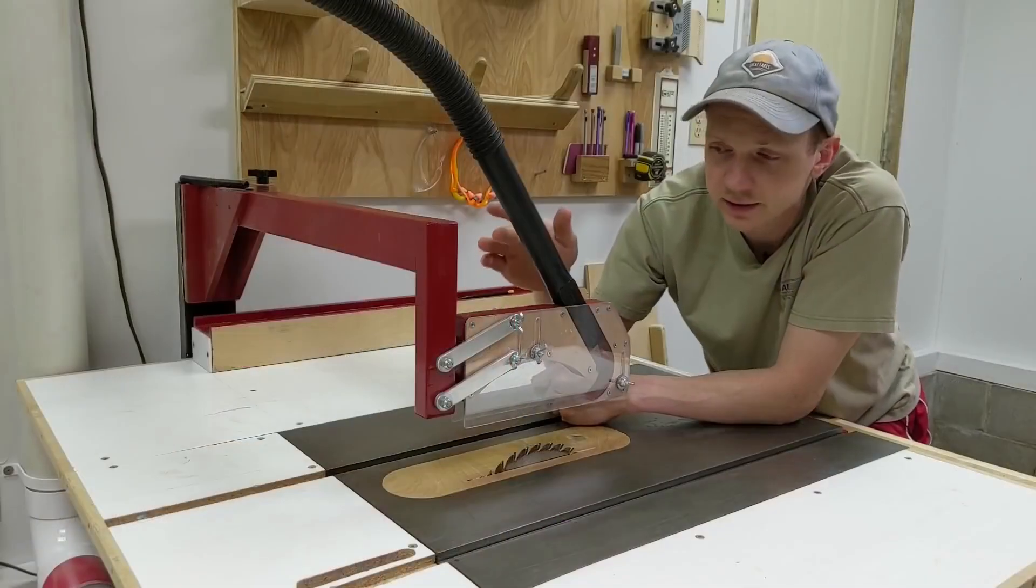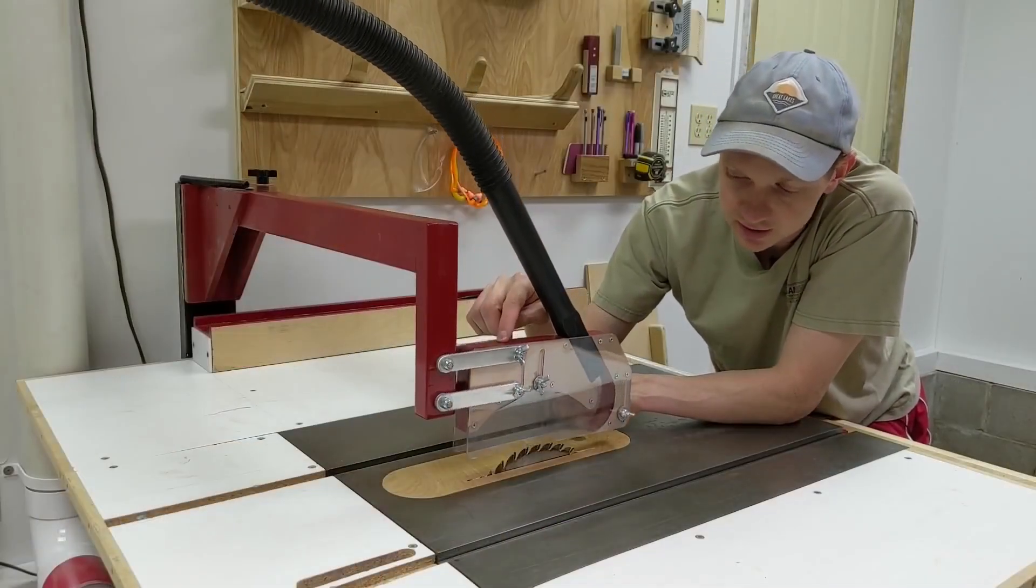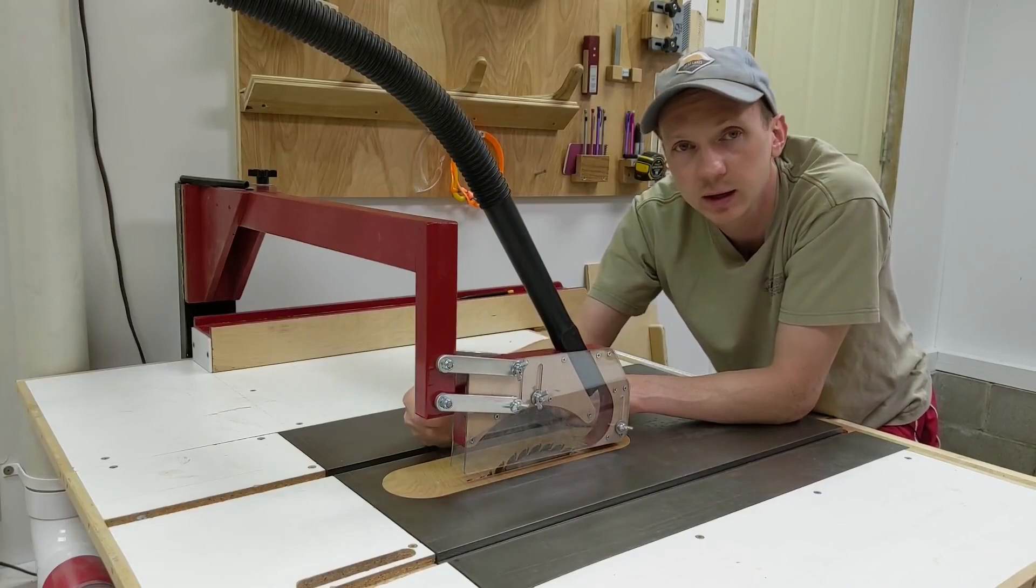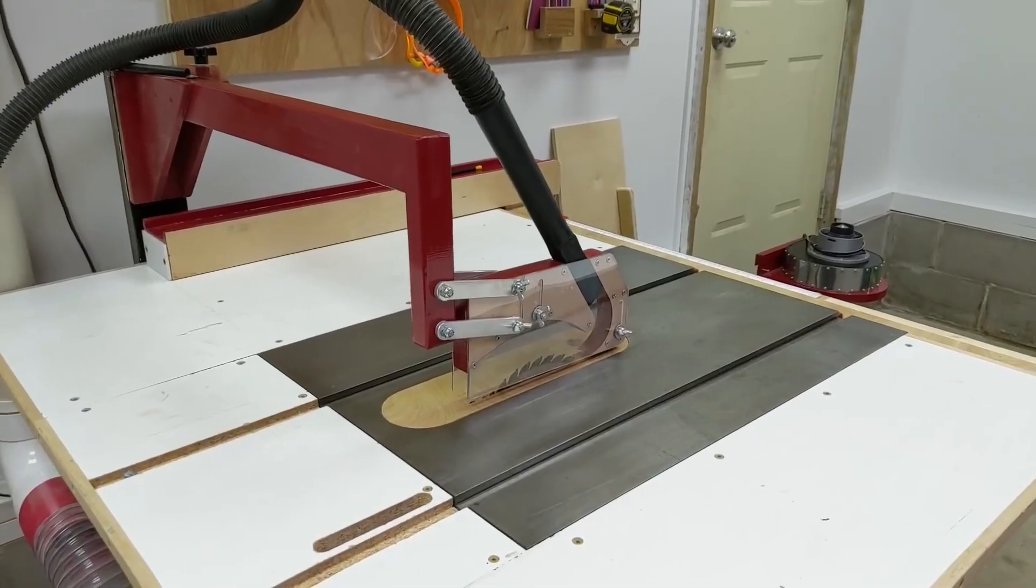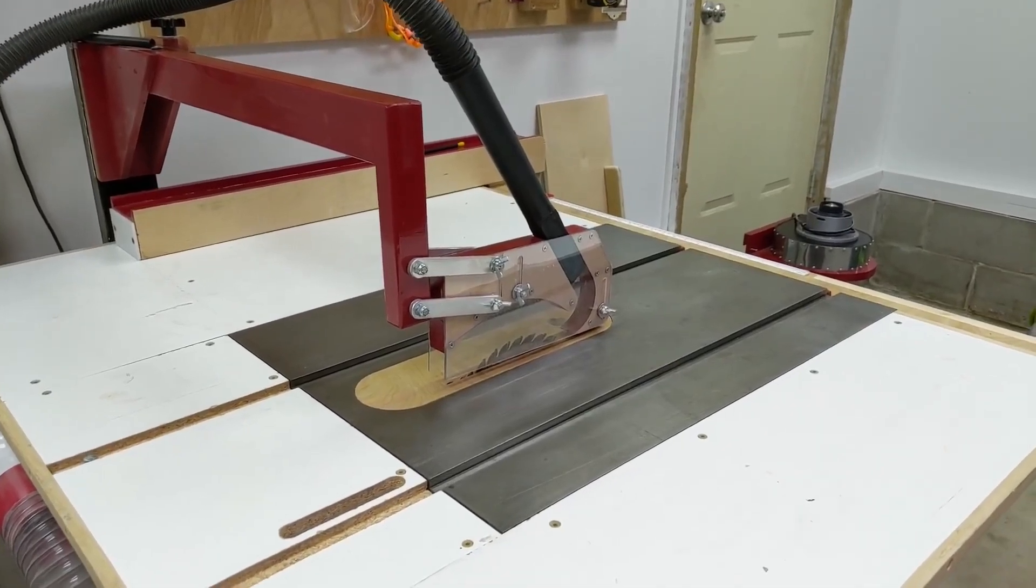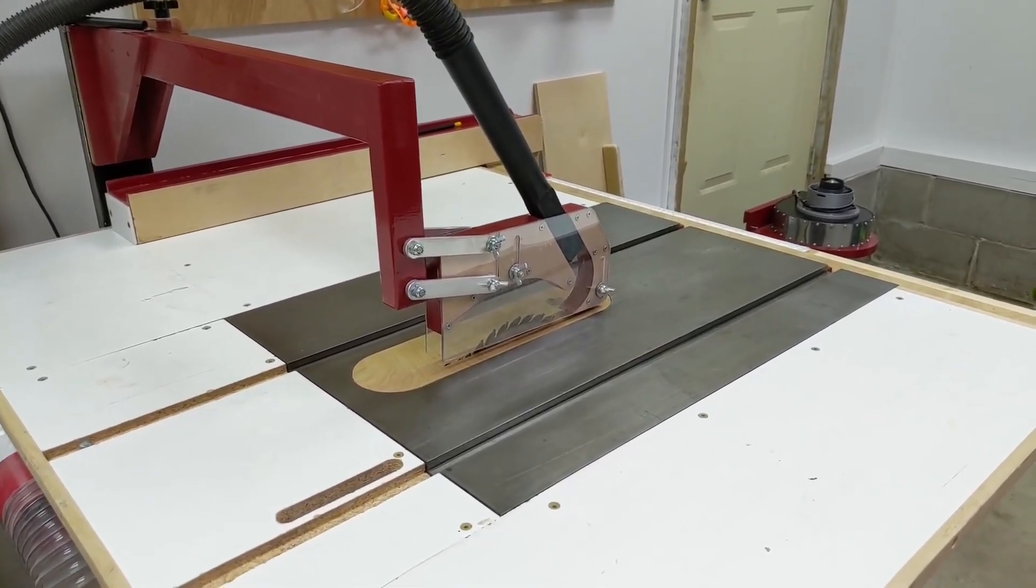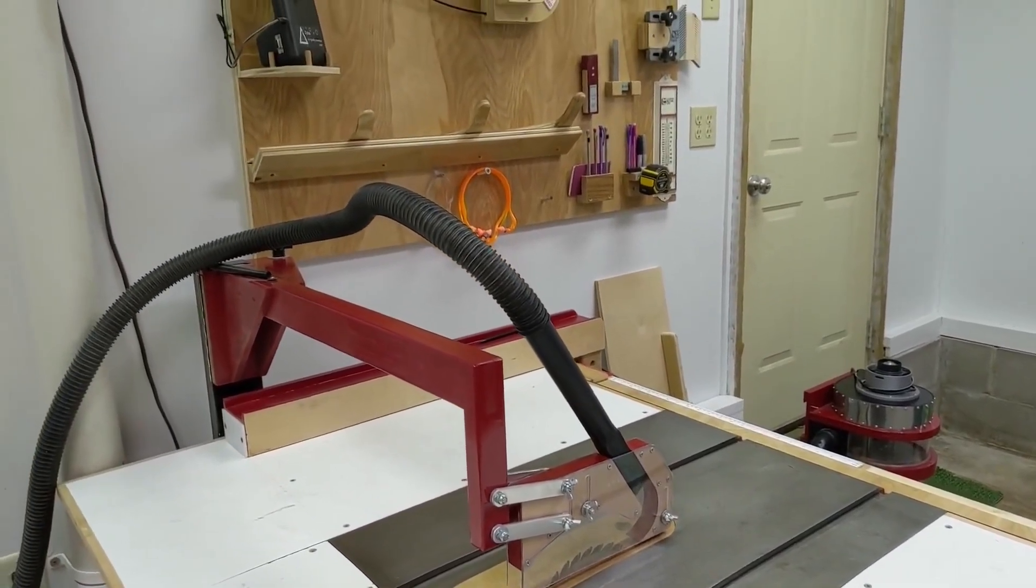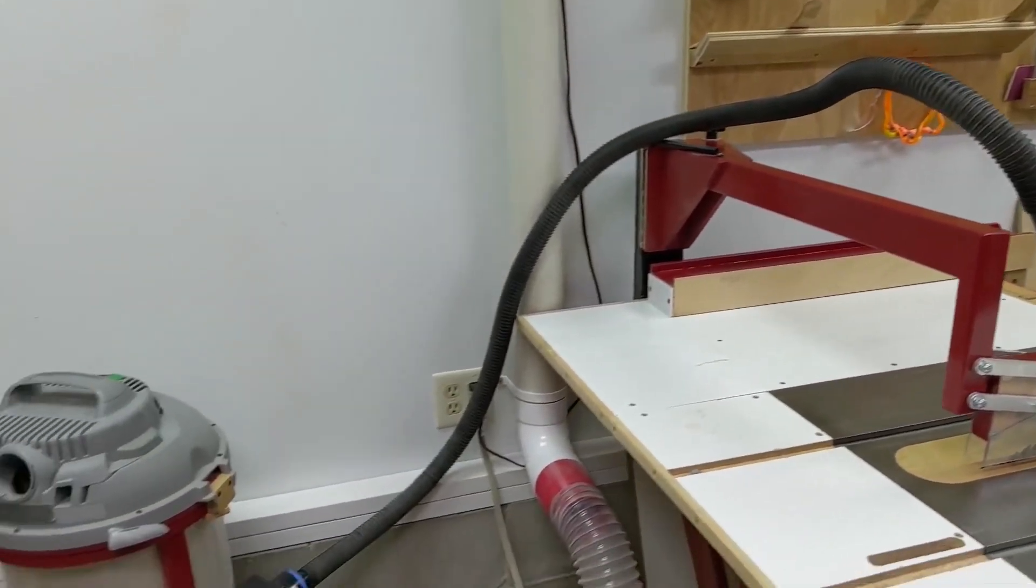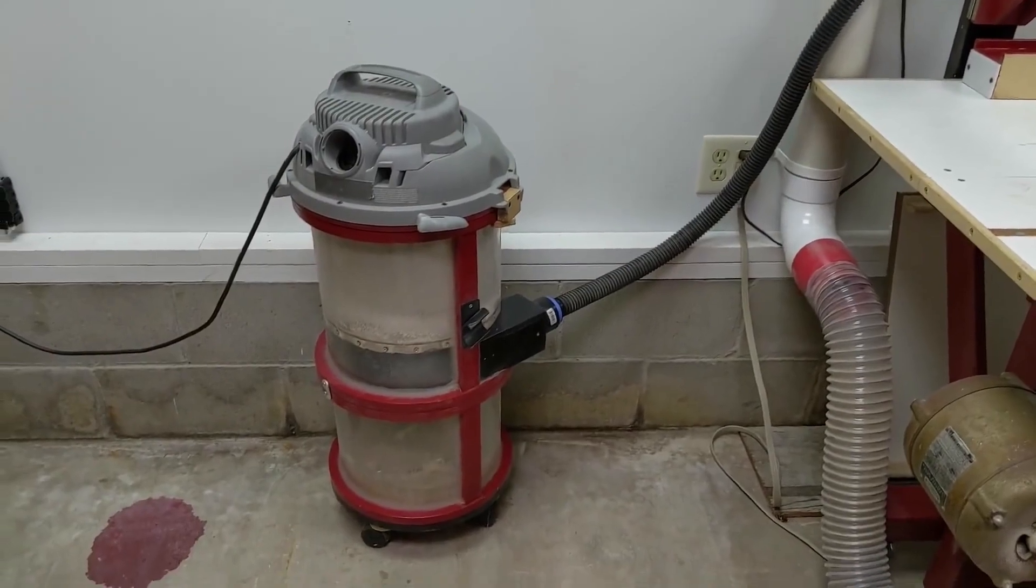This overarm dust collector does a really good job at collecting the rest of the dust that's thrown above the blade and otherwise into the air. With the design of this overarm dust collector, it's got a very small dust chamber hooked up to a pretty small dust hose, and that paired with a shop vac makes for really good dust collection.